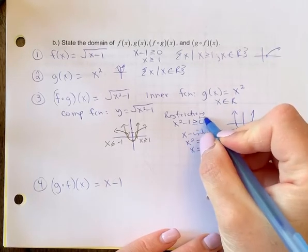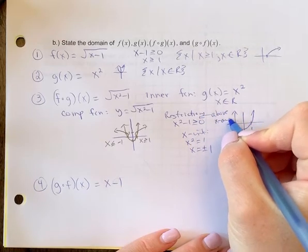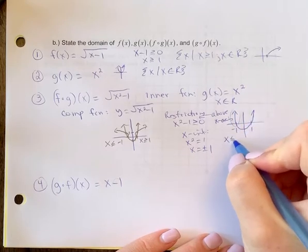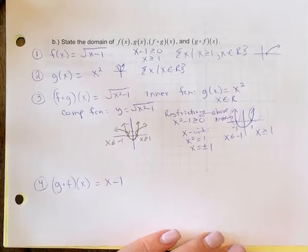And because this is greater than 0, I look at which part of the graph is above the x-axis. So that's this part right here, which is x is less than or equal to negative 1, and this part right here, which is x is greater than or equal to 1.